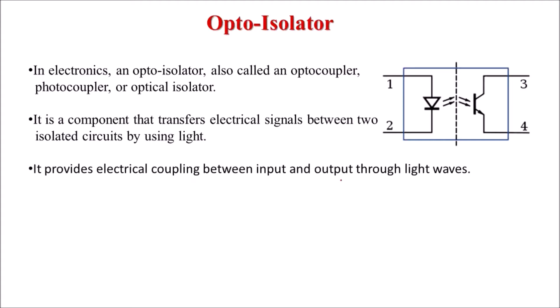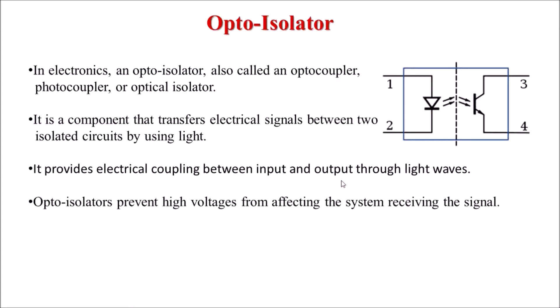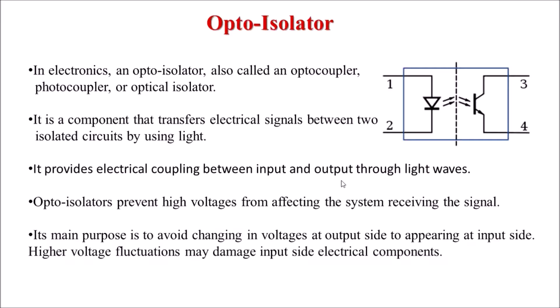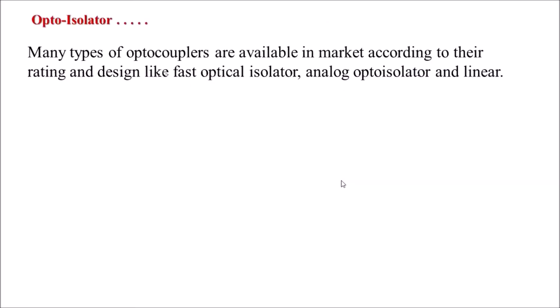It provides electrical coupling between input and output through light waves, and it prevents high voltages from affecting the system receiving the signal. Its main purpose is to prevent voltage changes on the output side from appearing at the input side. Higher voltage fluctuations may damage input side electrical components, so this circuit protects the lower voltage circuit from the higher voltage circuit.